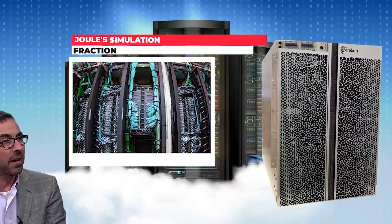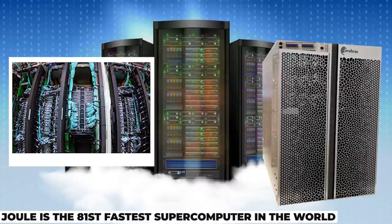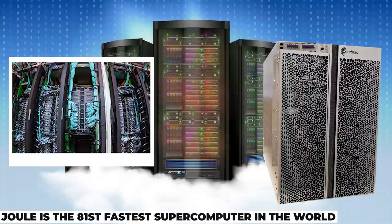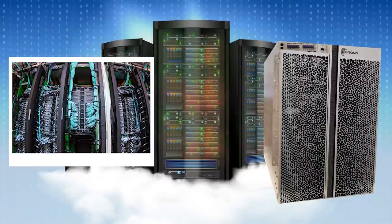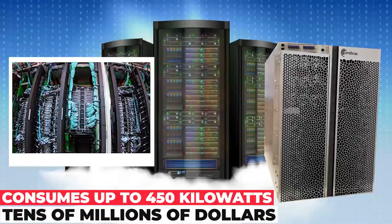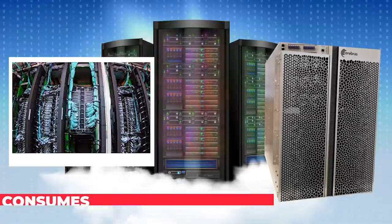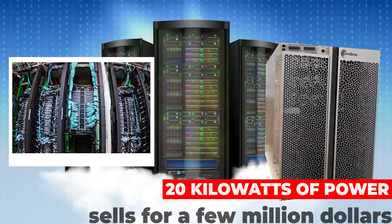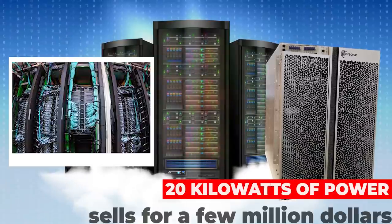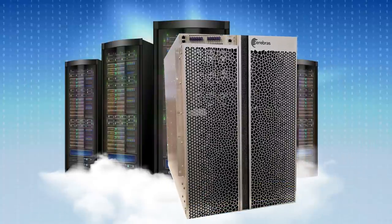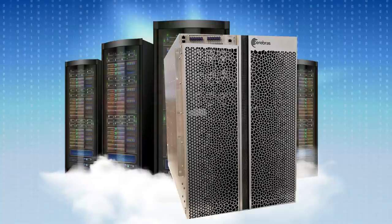The comparison between the two machines drives the point home. Joule is the 81st fastest supercomputer in the world, packs dozens of server racks, consumes up to 450 kilowatts of power, and needs tens of millions of dollars to build. The CS-1, by comparison, fits into a third of the server rack, consumes 20 kilowatts of power, and sells for a few million dollars. While the task is niche but useful and the problem is well suited to the CS-1, it's still a pretty stunning result.